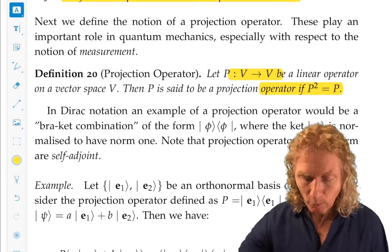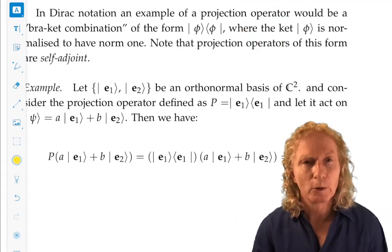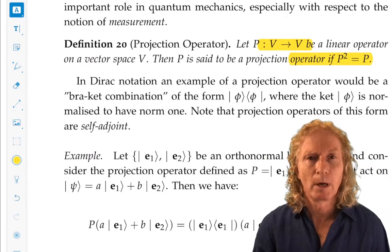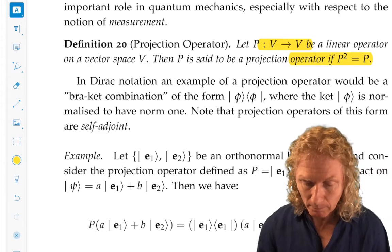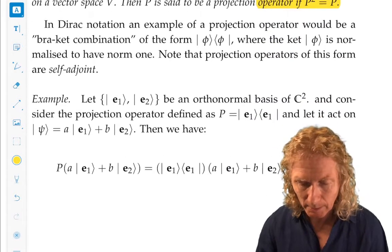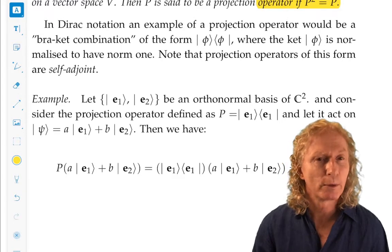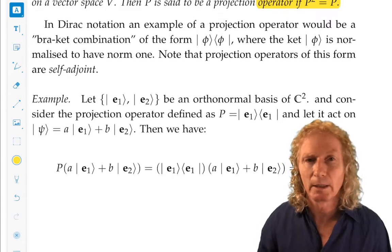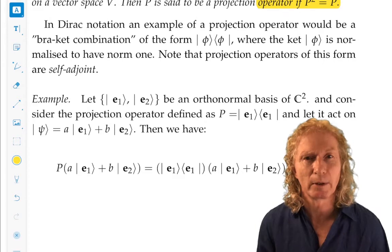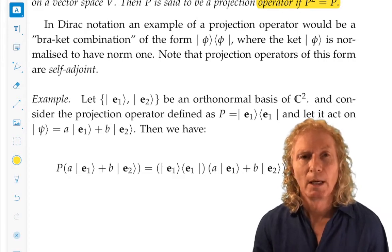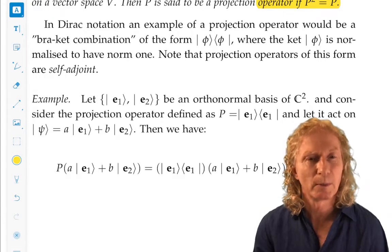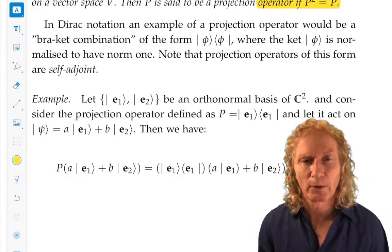Now what we're going to do is build such projection operators out of Dirac operators, bracket pairs. So let's do that by looking at an example. And it's going to turn out that these will be self-adjoint projection operators. And again, with the last example I looked at in the previous lecture, that's going to be essentially obvious. As I've said several times in these lectures, let's start off with the simplest possible case, two dimensions, and for us that will be C2.